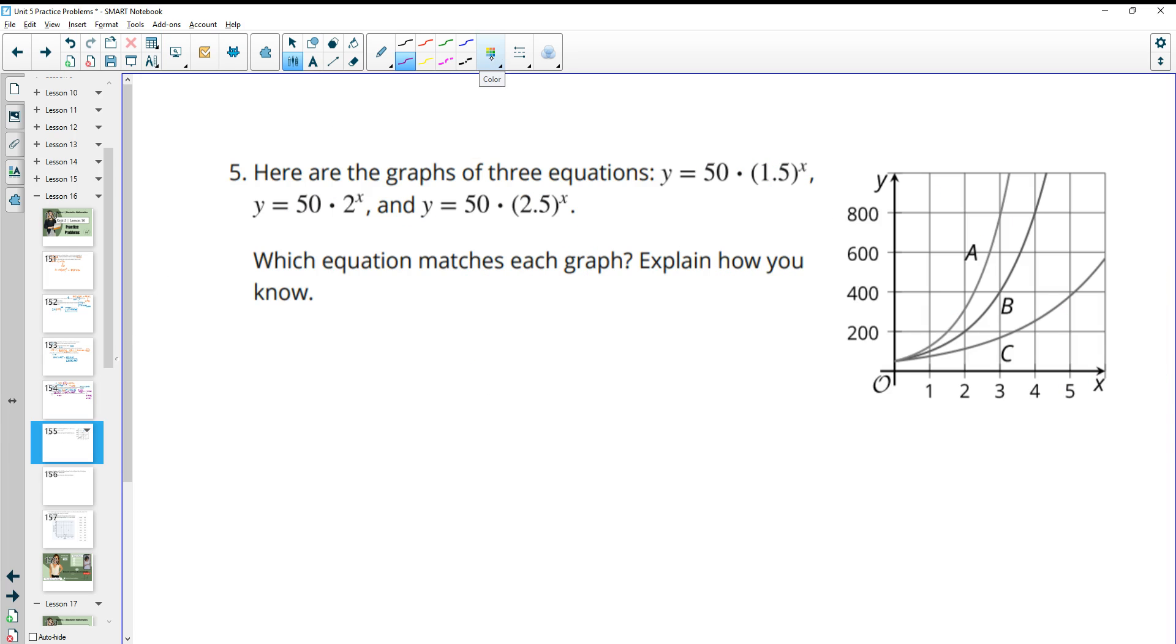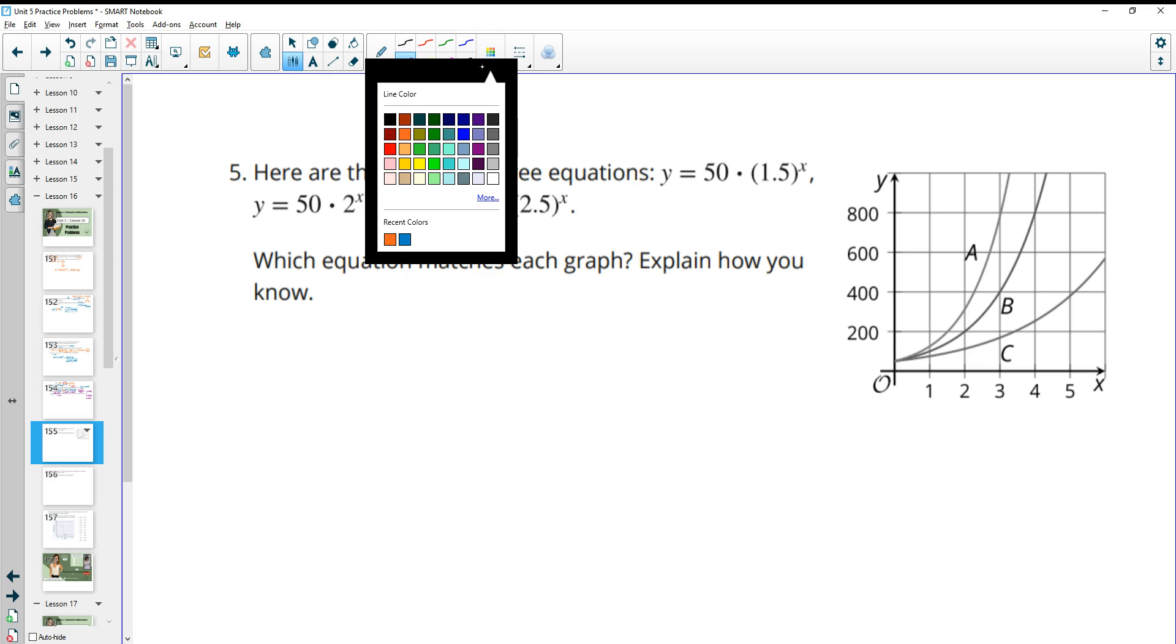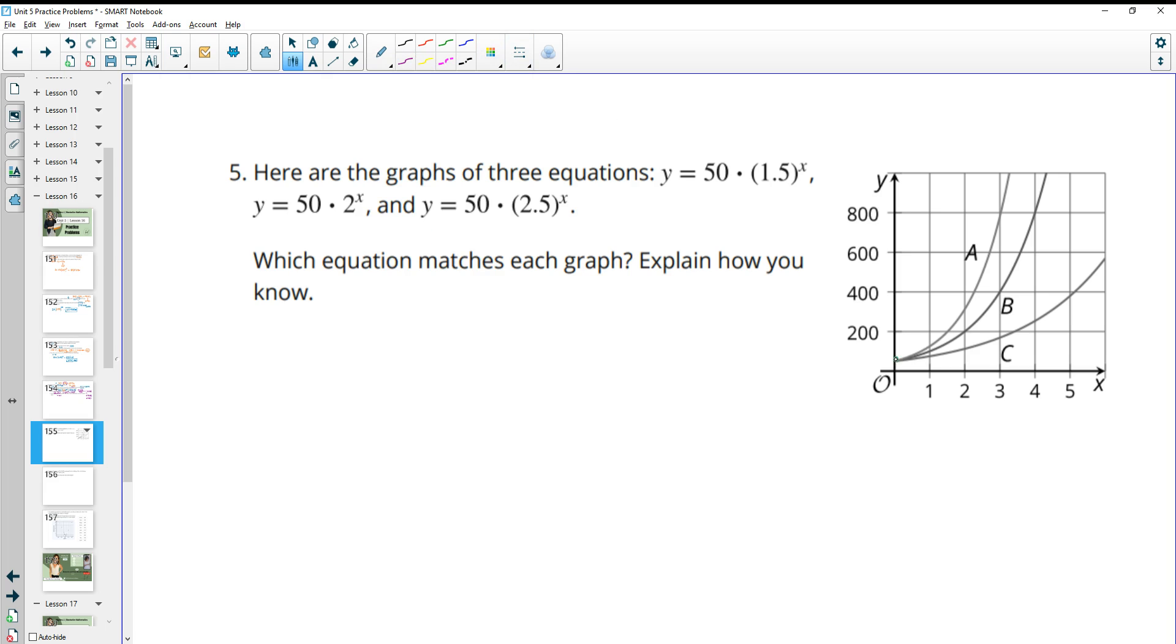Number five, here's the graph of three equations. Y equals 50 times 1.5 to the X, 50 times 2 to the X, and 50 times 2.5 to the X. Which equation matches each graph? So we obviously see that they start at the same spot, which makes sense because all of these have 50 as their initial value.